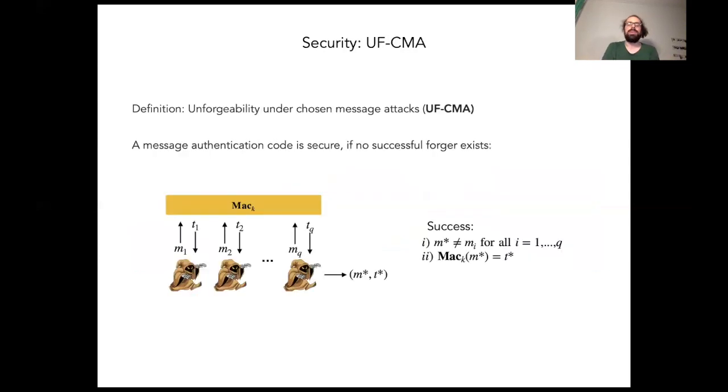The security property that we want from such a MAC is called unforgeability under chosen message attack, or UFCMA. It works as follows: we consider a message authentication code secure if no forgery adversary can be successful in the following game. In this game, the adversary gets oracle access to the MAC function. You can make a number of queries, send messages to the oracle and receive tags back.